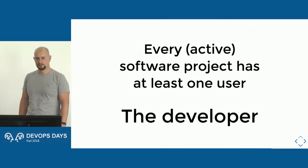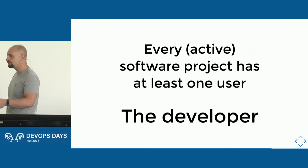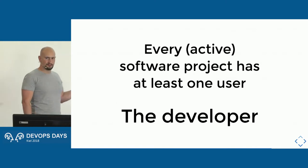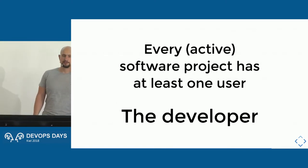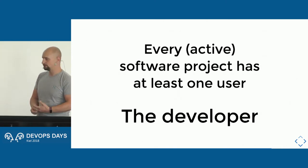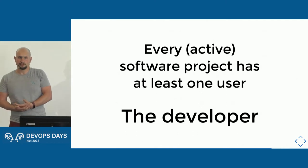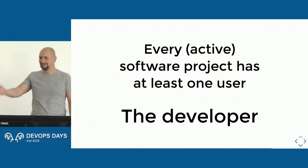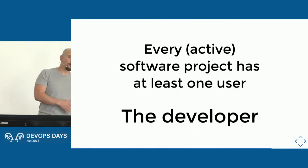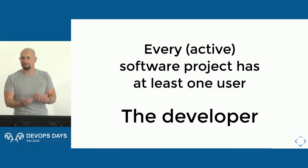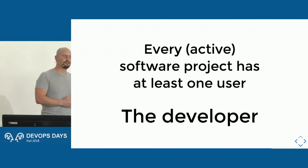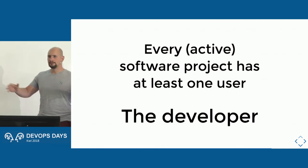Marketing, sales, business people — they're all types of users we have to support, and we have to think about their user stories. Every active software project has at least one user — and you know who that is? The developer. That's the first user every software project always has. And this is the ultimate continuous delivery experience: when you are the user of your own software, you get amazing feedback. You write something, use it, think 'who wrote this?', and immediately go fix it.